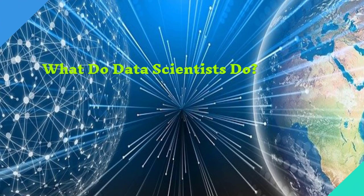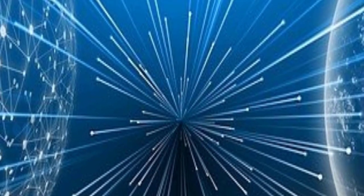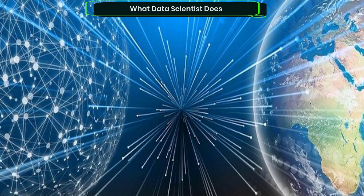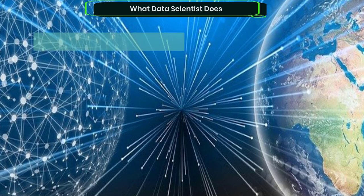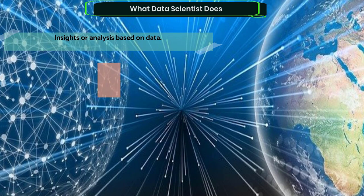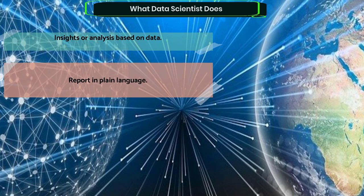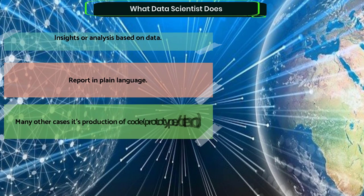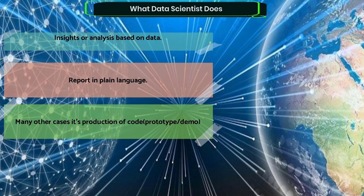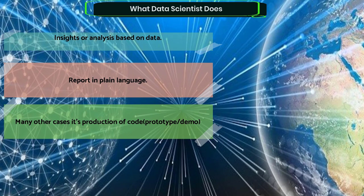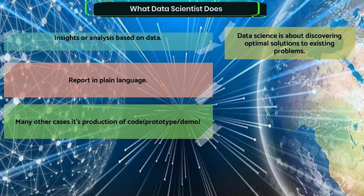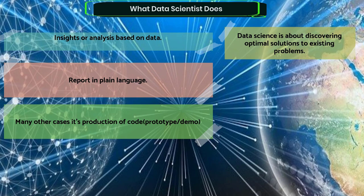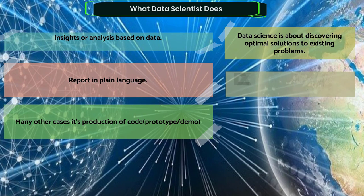What do data scientists actually produce in the real world? It depends on what you want them to do. In one situation, you might ask for insights or analysis based on data — you'll get a report or presentation expressed in plain business language that all stakeholders can understand. In many other cases, they produce actual code: a prototype and demo that developers later roll up into the main product, or production-quality code delivered directly into the product. Ultimately, data science is about discovering optimal solutions to existing problems.